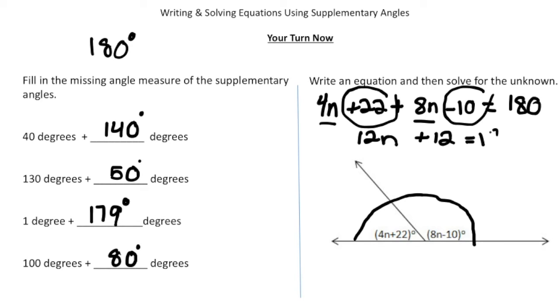That's going to equal 180. So now it's solving a two-step equation. Take away 12, so now we have 12n = 168.